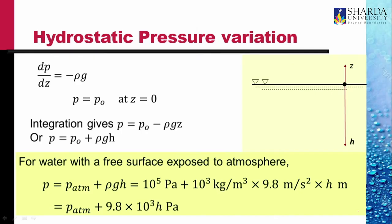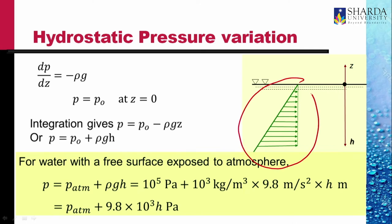For water with the free surface exposed to the atmosphere, p₀ is atmospheric pressure, about 10⁵ Pascal. Plugging in ρ = 10³ kg/m³ and g, the equation becomes p = p_atmosphere + 9.8×10³·h in Pascals. This is the pressure distribution, which is linear with depth — something you should be familiar with from high school.